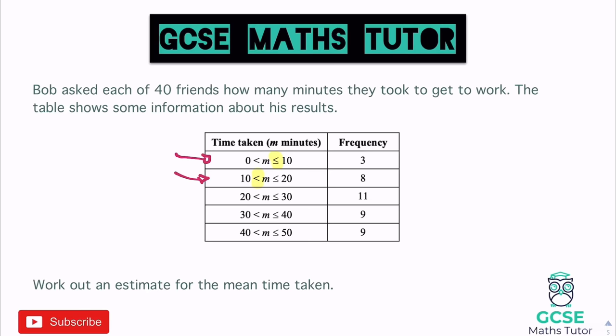Continuing the midpoints: 25 for 20 to 30, 35 for 30 to 40, and 45 for 40 to 50. If you can't spot the midpoint in your head, just add the two boundary values together and halve the answer. For example, 20 + 30 = 50, halved is 25. You can always use that trick to find the midpoint of any class interval.